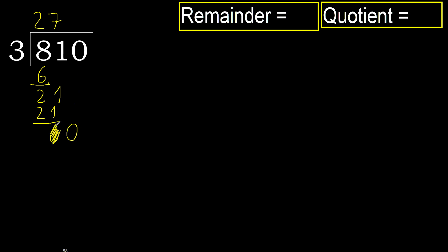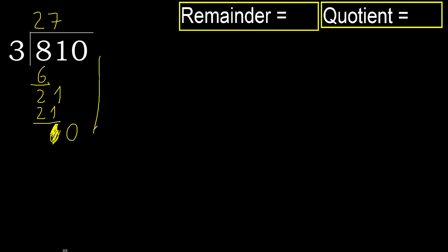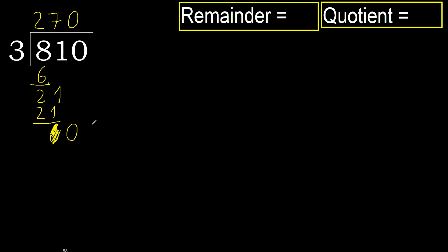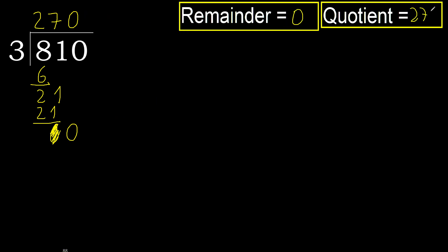Bring down the 0 on this side: 0. But 0 is less, so next. There is no further digit, therefore we are finished. Always complete with 0 — complete because here we finished with this number. 810 divided by 3 is 270.